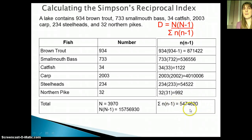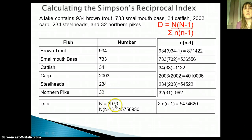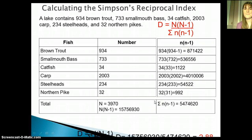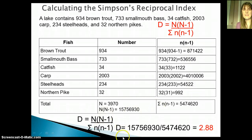I also need capital N, which is the sum of all individuals — 3,970. I then multiply that by N minus 1, which is 3,969, giving me N times (N minus 1) for the top of the equation. The relationship between the top number and the bottom number gives me the diversity of the area. Dividing, I get D equals 2.88.